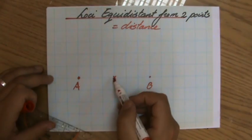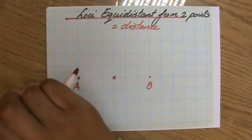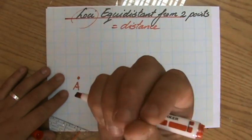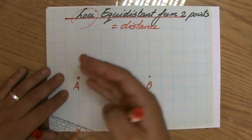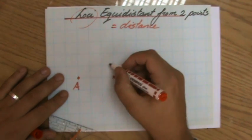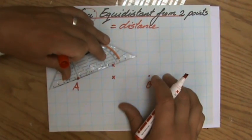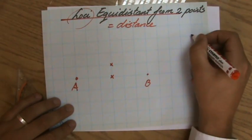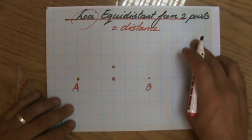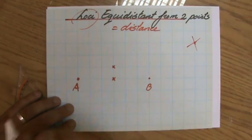So this point is equidistant to A and B. But that's only one point. And loci means all the points fitting a description, all the points equidistant to A and B. Because, for instance, the point here is also equidistant to A and B. The point here is not equidistant because it's clearly closer to B than it is to A.